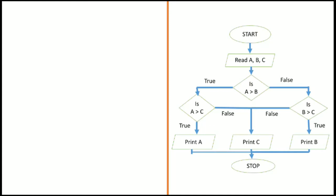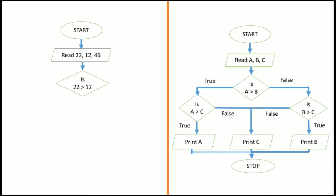Now we take different values. Suppose 22, 12, and 46 are the 3 numbers — A = 22, B = 12, C = 46. First, we compare A with B: is 22 greater than 12? Yes, it is true. So now we compare A with C: is 22 greater than 46? No, it is not true — the condition is false. So the largest number is C, that is 46.